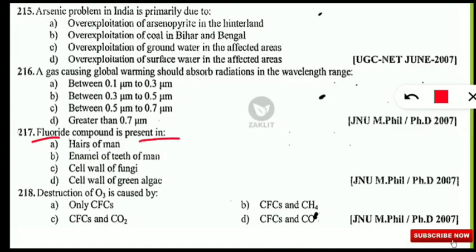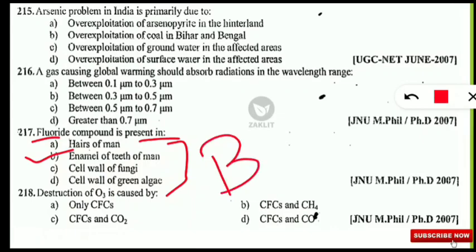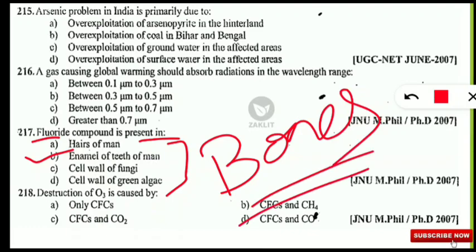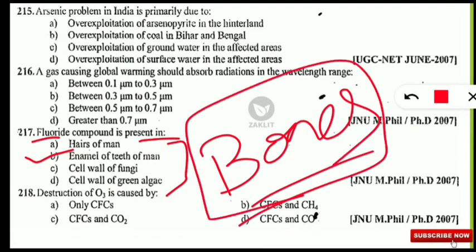The next question: fluoride compound is present in which of the following — hairs of man, enamel of teeth of man, cell wall of fungi, or cell wall of green algae? The correct answer is enamel of teeth of man. Also note that bones are also composed of fluoride, and fluoride is added to toothpaste to fight against tooth decay.